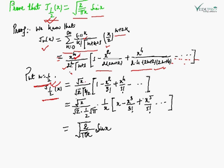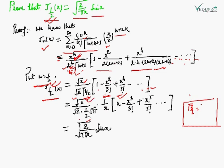Taking n = 1/2, we have x^(1/2), that is √x, upon √2 · Γ(3/2), times the bracket [1 - x²/3! + x⁴/5! - ...]. Now Γ(3/2) = (1/2)·Γ(1/2) = √π/2.